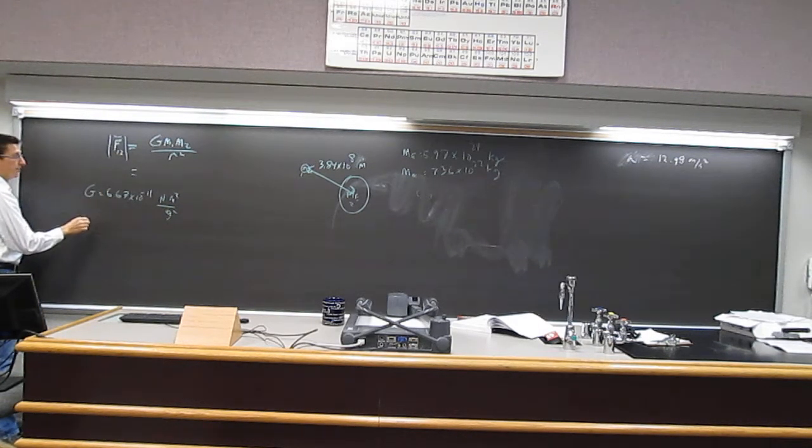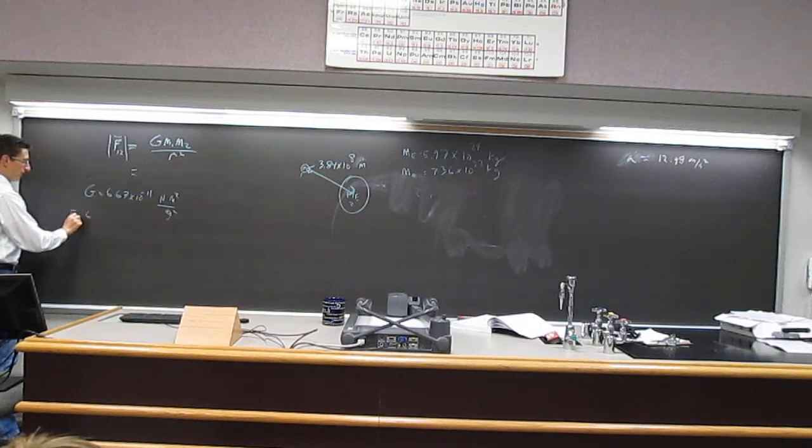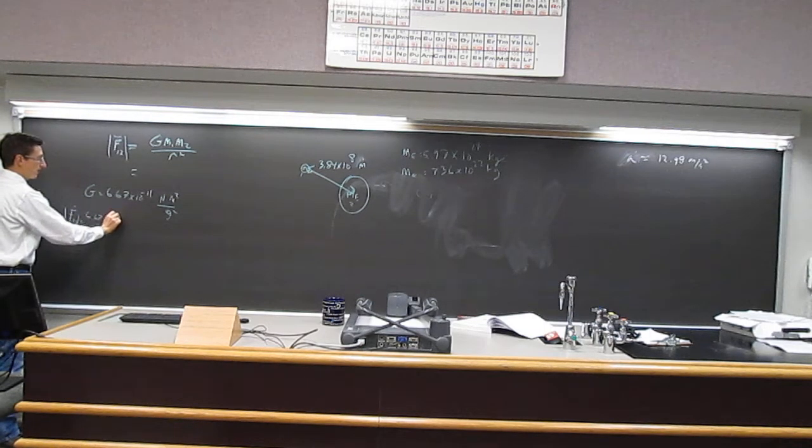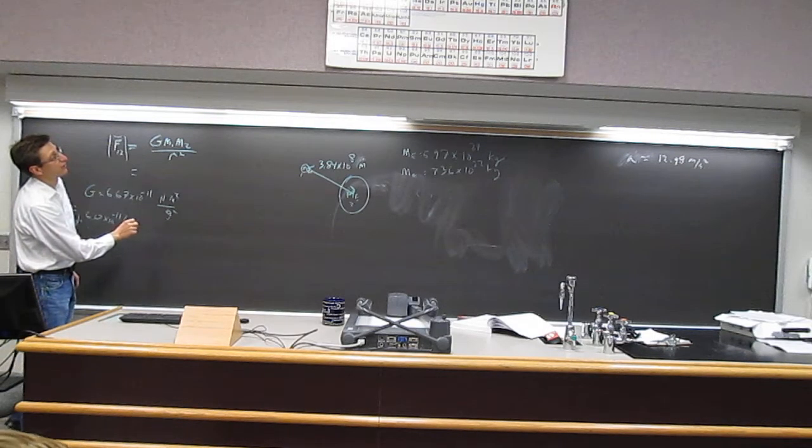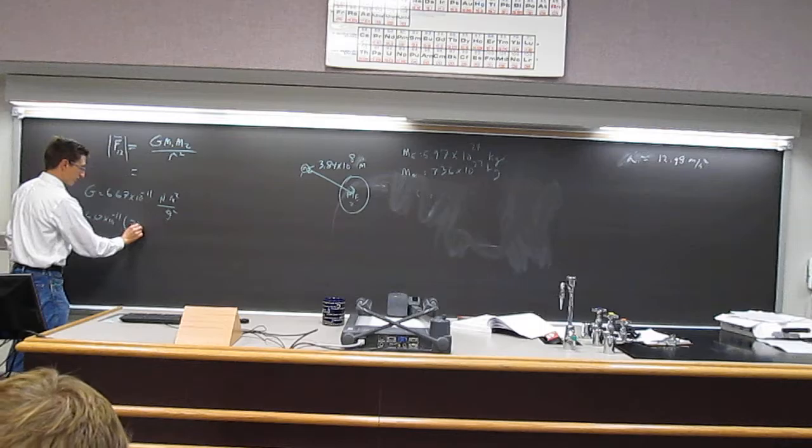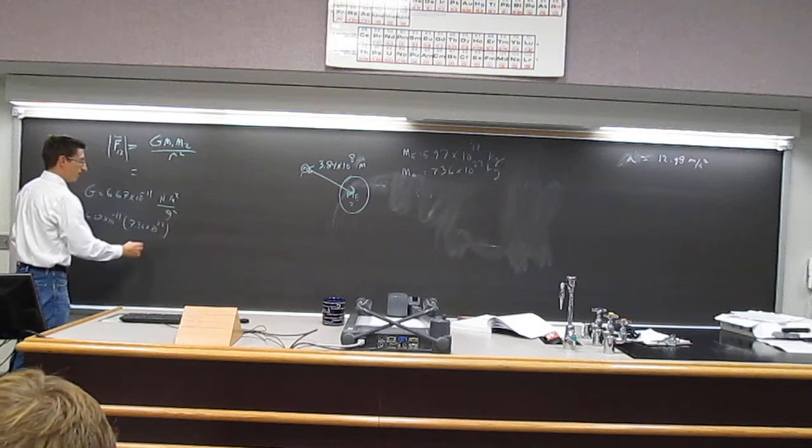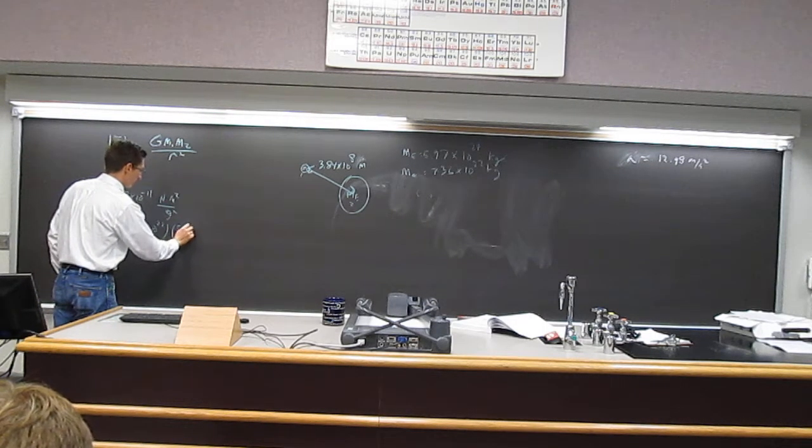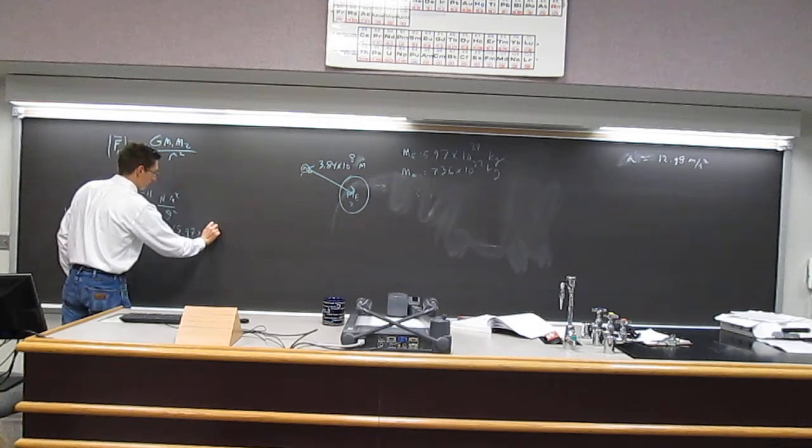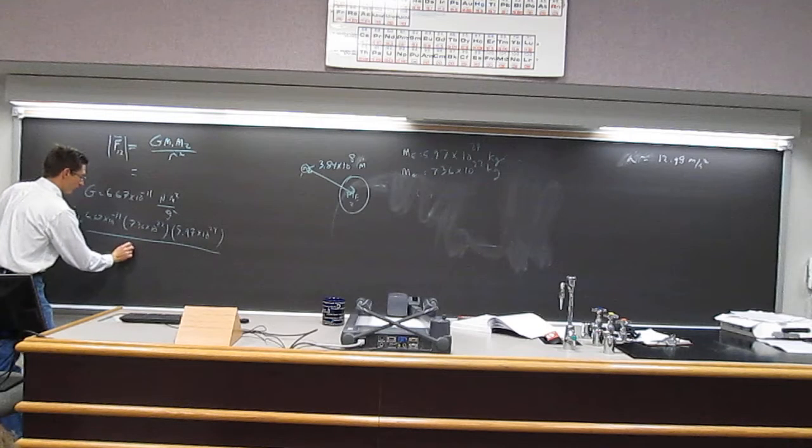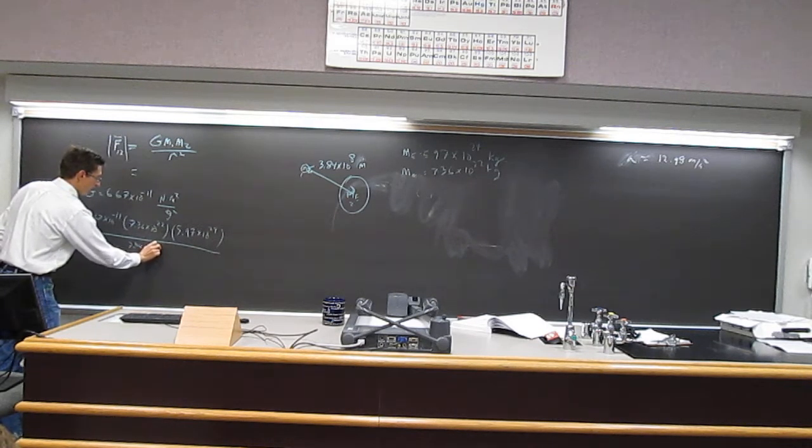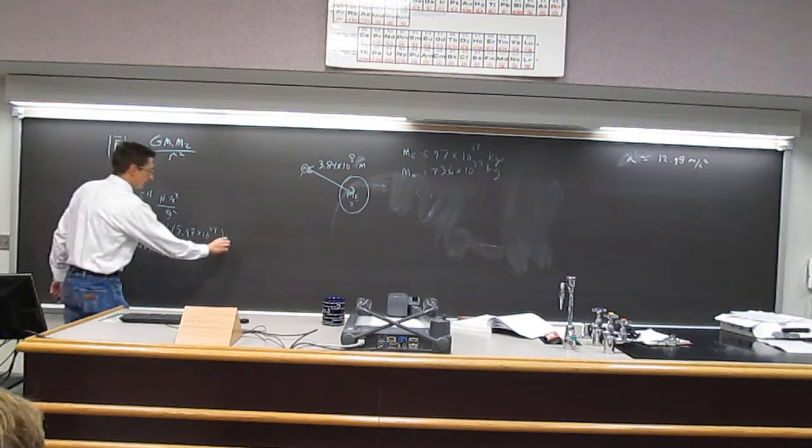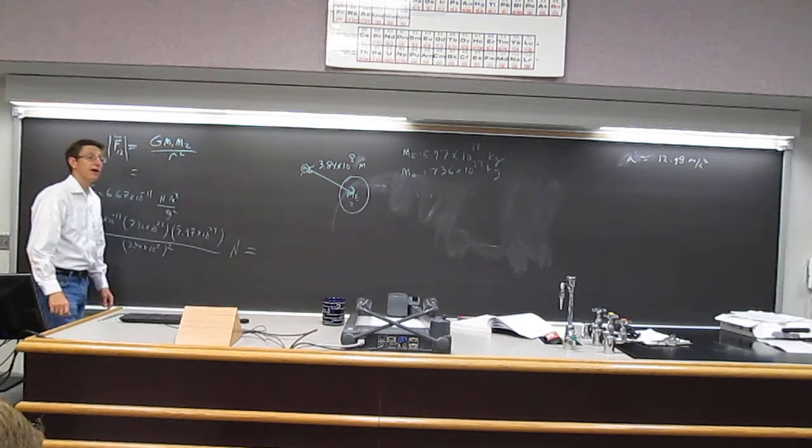So if I plug in numbers, I'm going to get 6.67 times 10 to the minus 11 times 7.36 times 10 to the 22, and then the mass of the moon, or mass of the earth is 5.97 times 10 to the 24, all over 3.84 times 10 to the 8, and then that whole thing has to be squared. And then the units will be in newtons.